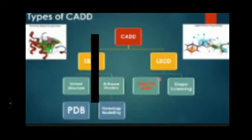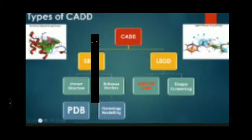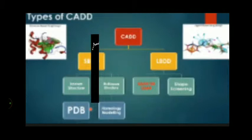CADD is broadly classified into two parts: Structure-Based Drug Design (SBDD) and Ligand-Based Drug Design (LBDD). Structure-based drug design is applied when you know about the structure of the target. It can involve known or unknown structures. For known structures, you can find them on PDB websites such as RCSB — these are protein data banks where proteins for various receptors, enzymes, and other targets are saved.